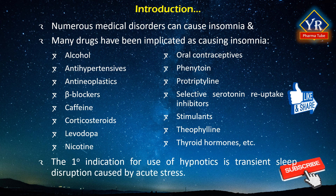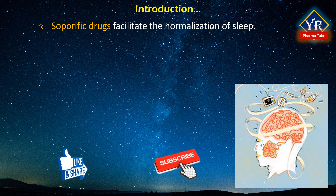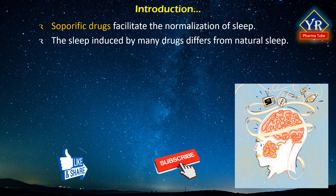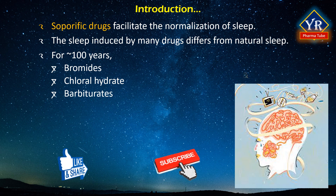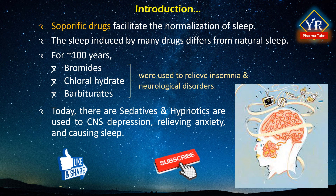The primary indication for use of hypnotic agents in patients with insomnia is transient sleep disruption caused by acute stress. Soporific agents are drugs that facilitate the development and normalization of sleep. However, the sleep induced by the majority of drugs differs from natural sleep. For approximately 100 years, bromides followed by chloral hydrate and subsequently by barbiturates were the only drugs capable of relieving insomnia and neurological disorders. Today, there are many compounds of various chemical classes that can be classified as sedatives and hypnotic drugs, capable of causing various degrees of CNS depression, relieving anxiety, and causing sleep.